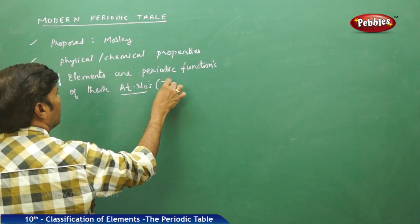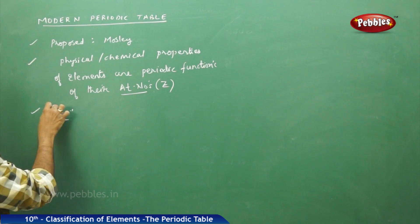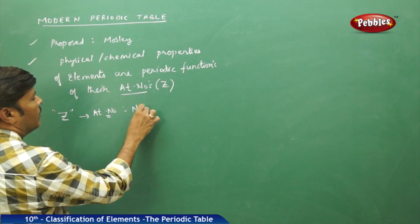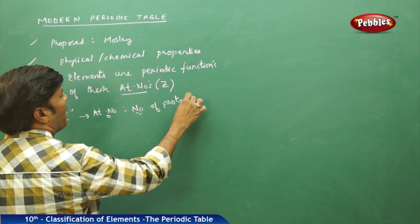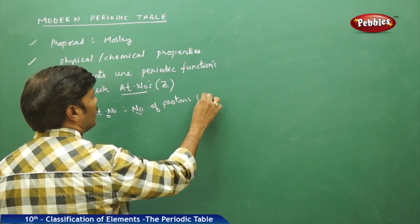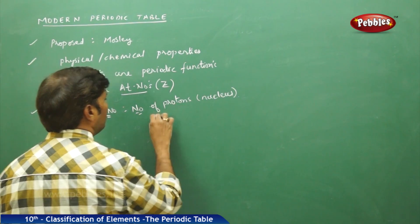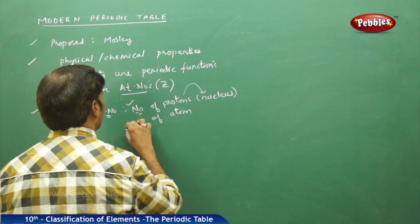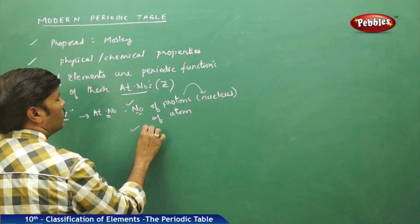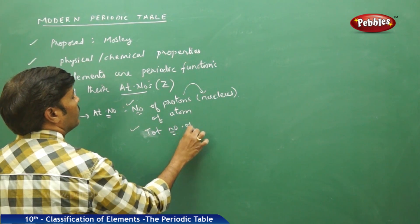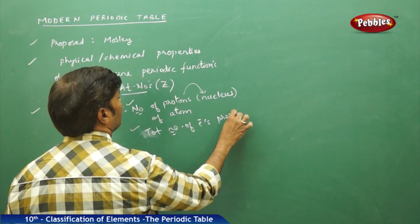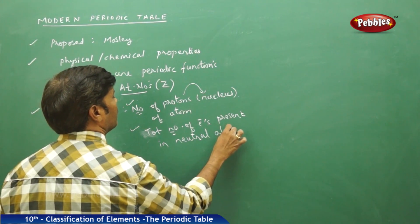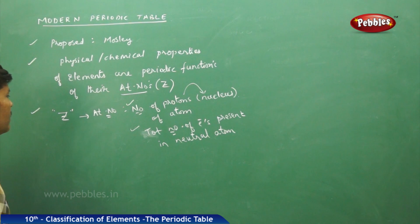When you go for atomic numbers, atomic number is given by the symbol Z. Atomic number represents the number of protons present in the nucleus of an atom, and also it gives the total number of electrons present in a neutral atom. This is the significance of atomic number.